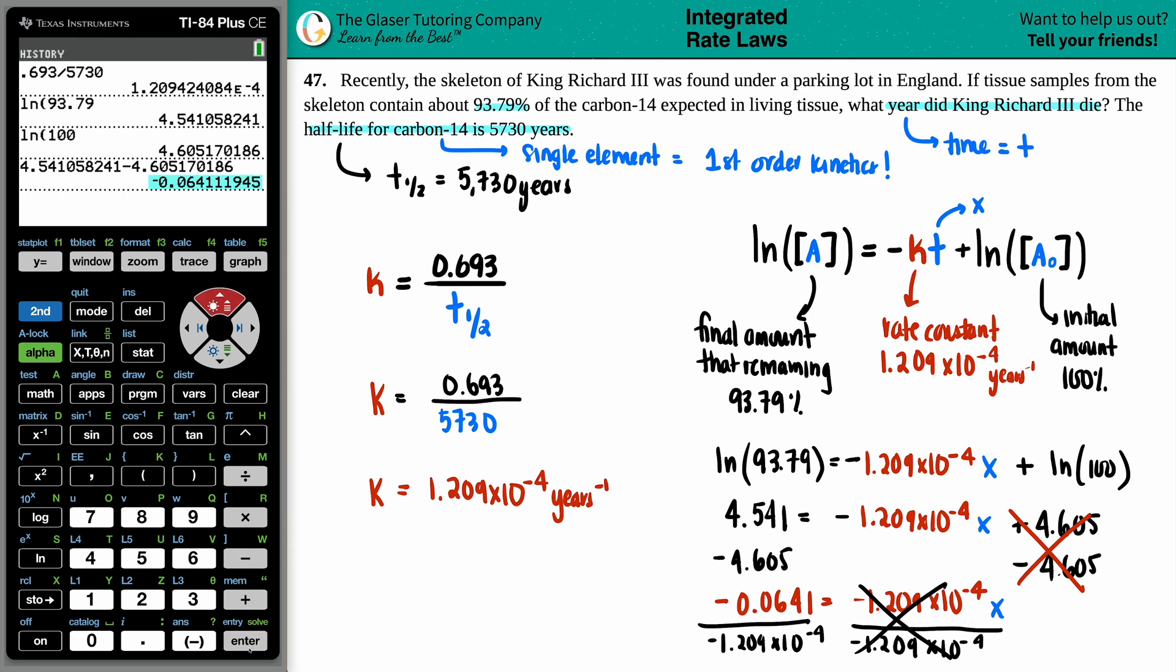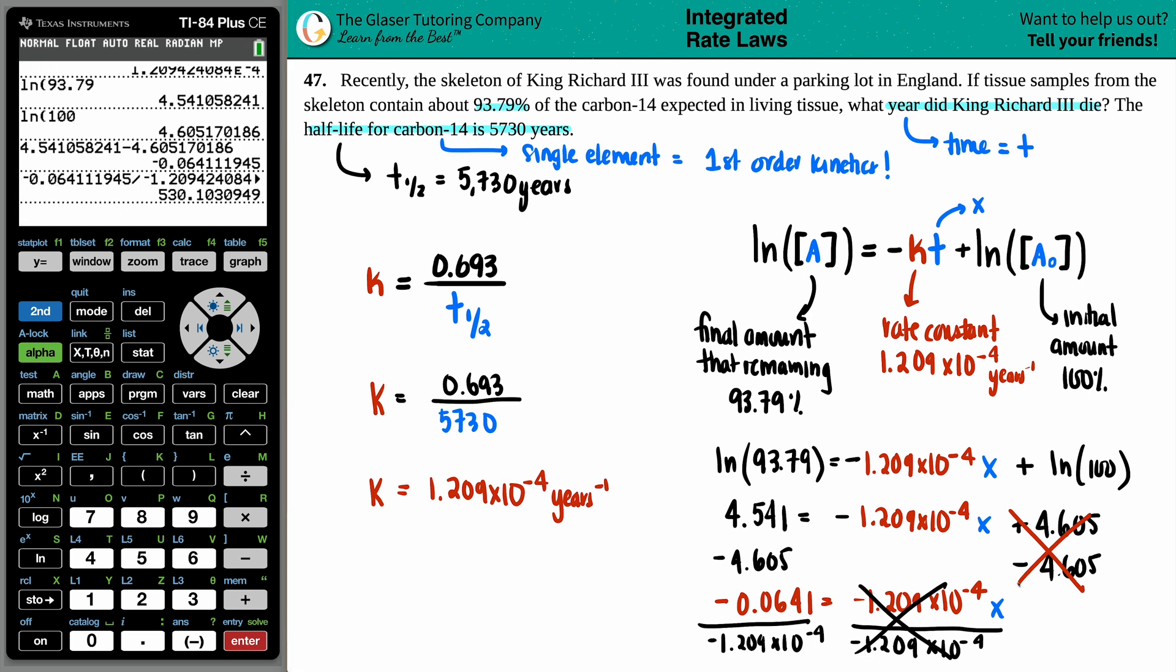And let's see. I'm going to take this value and divide it by negative. And I guess I could grab the actual k value from all the way from the top. That's why I love the TI-84 because it just makes things easier. Less room for error. And I'm going to press enter. And there we go. So in this case, we have x equals 530 years.